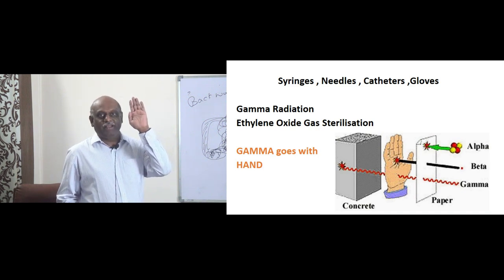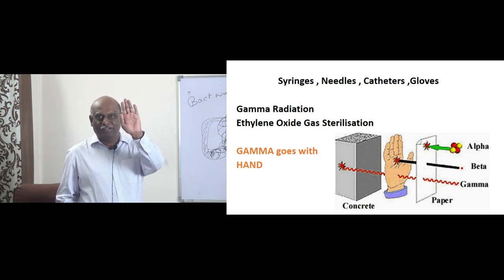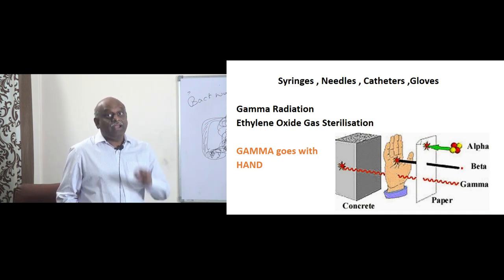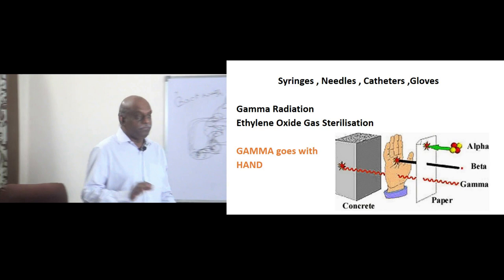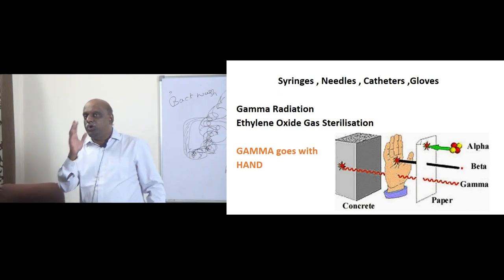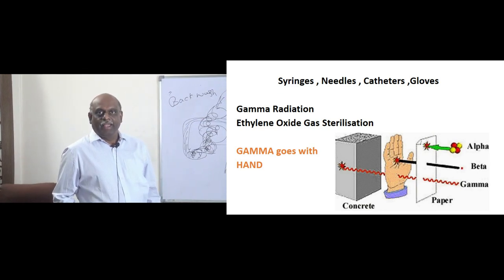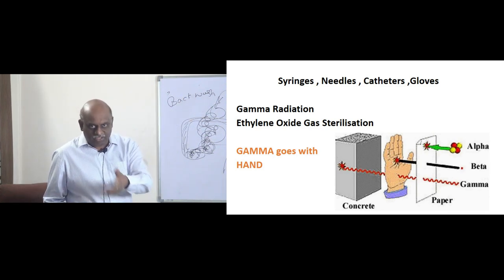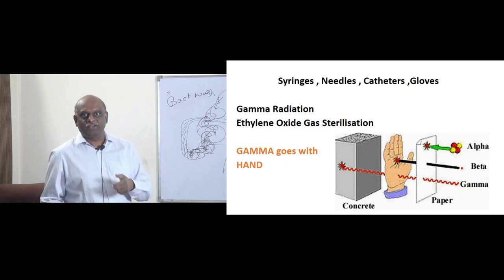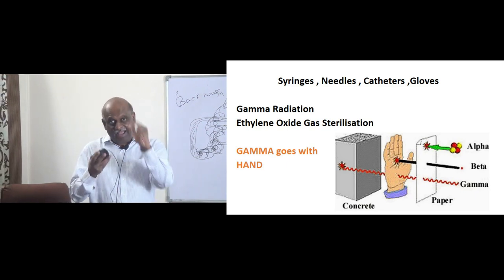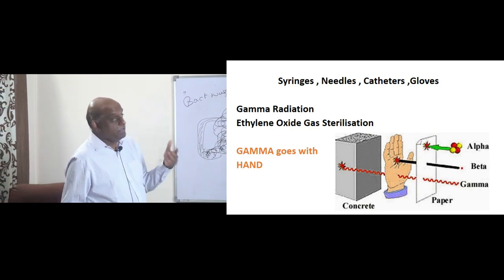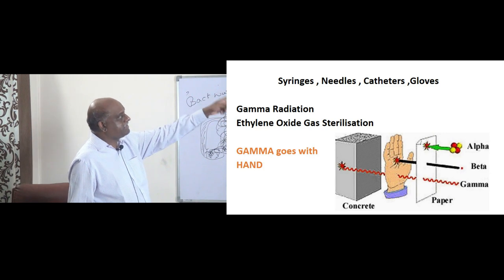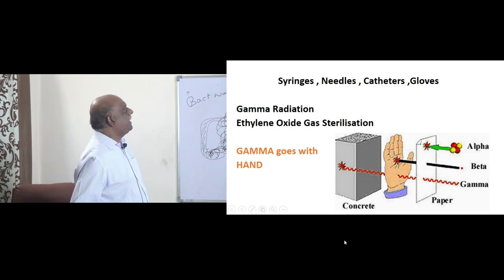Remember the Indian National Congress palm symbol — that's how you remember gamma. If you remember that image, you will remember palm. To your palm you wear the glove, and with your palms you do injections — syringes, needles, catheters. You pass a catheter using your hands only. So, you remember the hand, you remember gamma, and gamma is used for syringes, needles, catheters, and gloves.